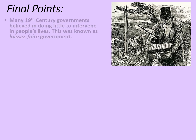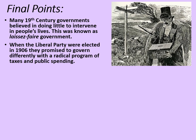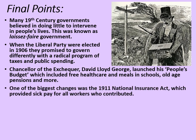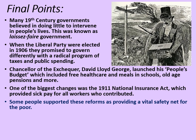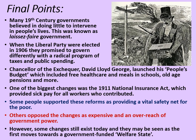To sum up: many 19th century governments believed in doing little to intervene in people's lives — this was known as laissez-faire or do nothing government. When the Liberal Party were elected in 1906, they promised to govern differently with a radical programme of taxes and public spending. Chancellor of the Exchequer David Lloyd George launched his People's Budget, which included free healthcare and meals in schools, old age pensions and more. One of the biggest changes was the 1911 National Insurance Act, which provided sick pay for all workers who contributed. Some people supported these reforms as providing a vital safety net for the poor, while others opposed the changes as expensive and an overreach of government power. However, some changes still exist today, and they may well be seen as the first moves towards a government-funded welfare state.